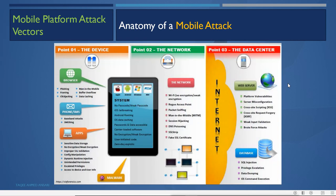The anatomy of a mobile attack begins with the device itself. Attacks on the device through the browser include phishing attacks, framing attacks, clickjacking attacks, man-in-the-mobile, buffer overflow, and data caching attacks.